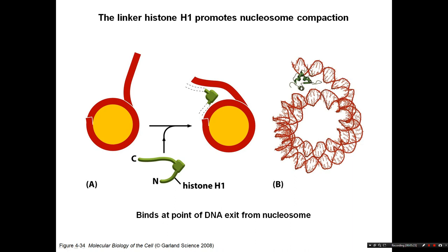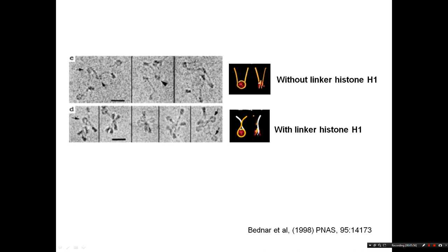There is a fifth sort of histone called the linker histone. The most common linker histone is H1, but there is also H5 and other variants. Linker histones bind on the outside of the nucleosome near where the linker DNA enters and leaves. The tails of histone H1 are positively charged, so the positive tails of the linker histone interact with the negatively charged DNA, helping to bind the DNA and compact the chromatin.